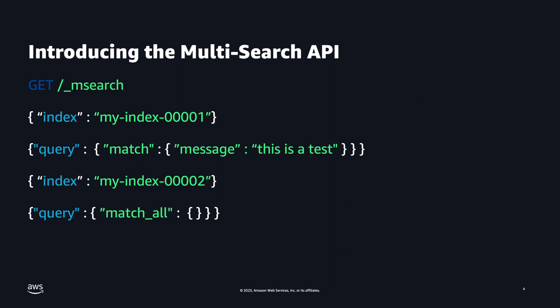Luckily, OpenSearch has a surprise for you — the multi-search API. It's a game-changer in data retrieval. Perform multiple searches in a single API call, saving time and boosting performance. Say goodbye to latency and unnecessary network traffic. Bundle your queries with the mSearch endpoint and unlock the full potential of your applications.